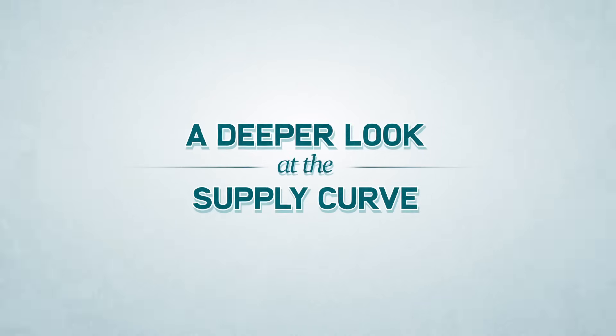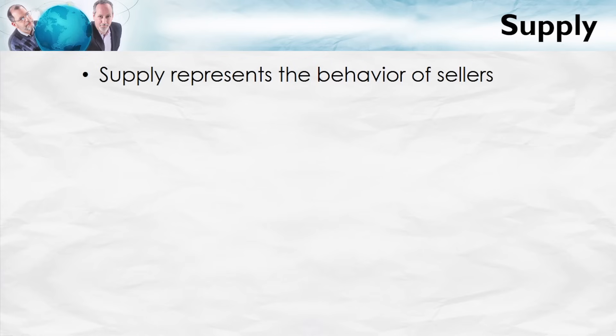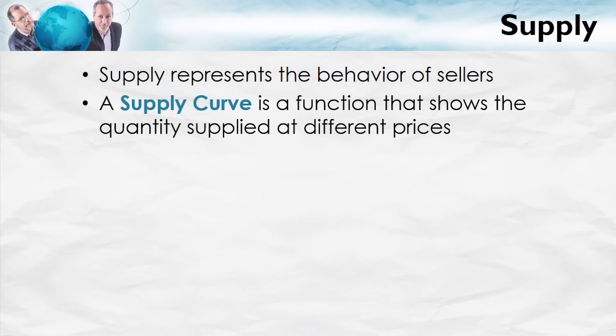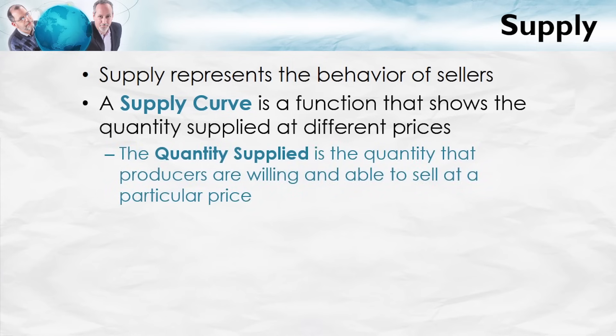Today we turn to look at the supply curve. I'm going to move through this material a little bit more quickly than through demand, because many of the ideas are similar. The supply curve represents the behavior of sellers, and is a function that shows the quantity supplied at different prices. The quantity supplied is the quantity that producers are willing and able to sell at a particular price.